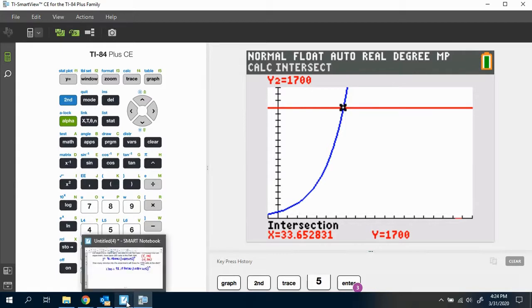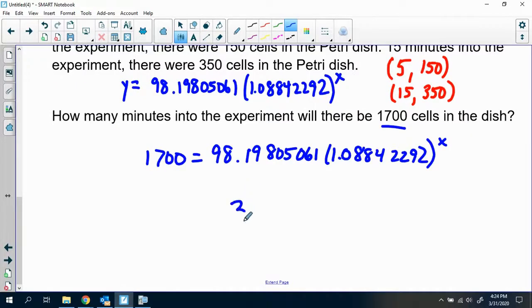So there's where I can round to three decimal places. 33.653 minutes into the experiment. There are 1,700 cells in the dish. So one more time, even though this is an initial amount of cells and this is a growth rate, we can't be rounding these numbers because we're going to be off by a very considerable amount. If we do, because we end up having with what's going on, we're multiplying by these numbers repeatedly. And so then we get off by a very large amount. Let's go. We'll be right back.